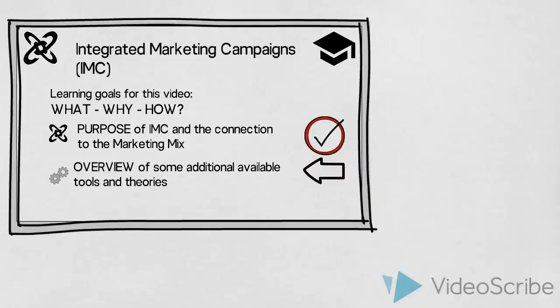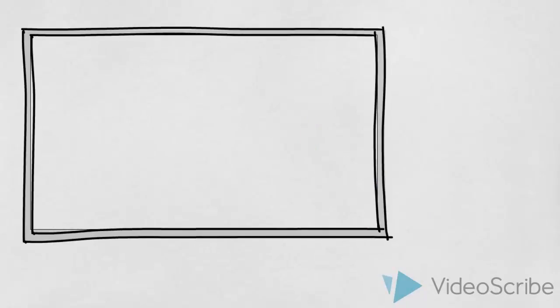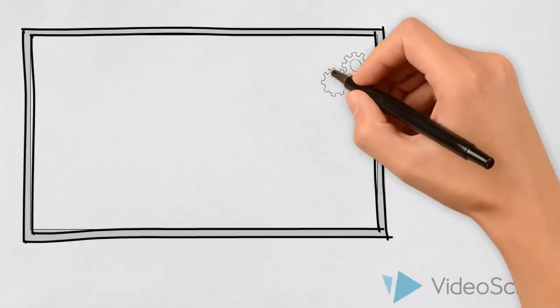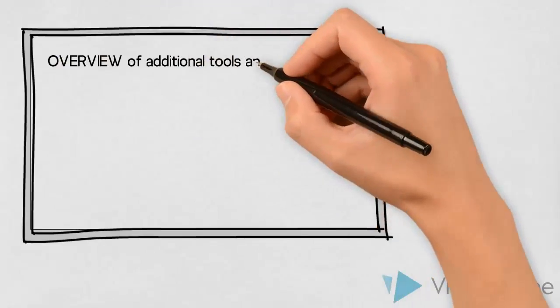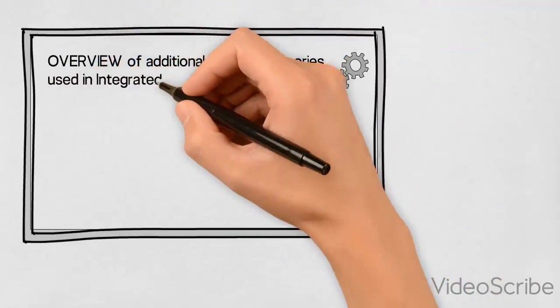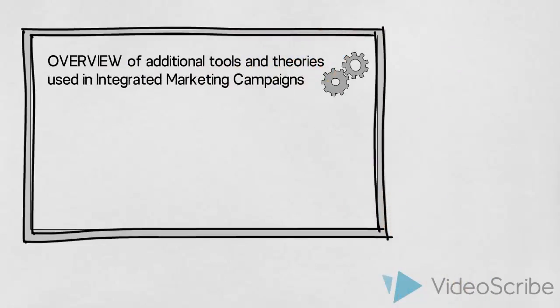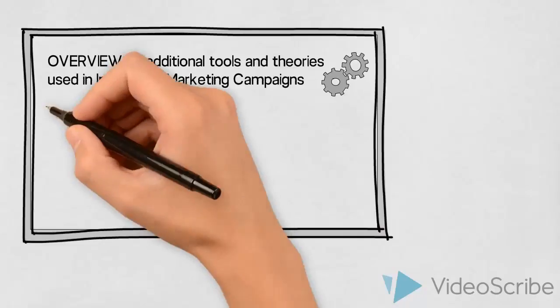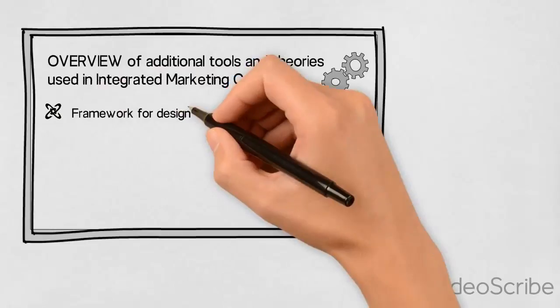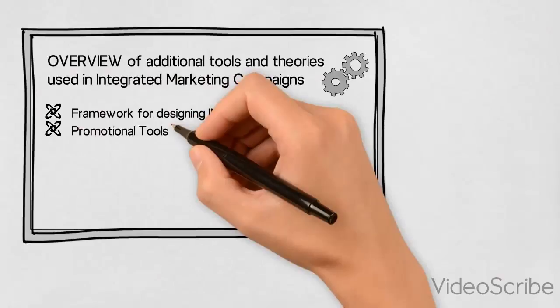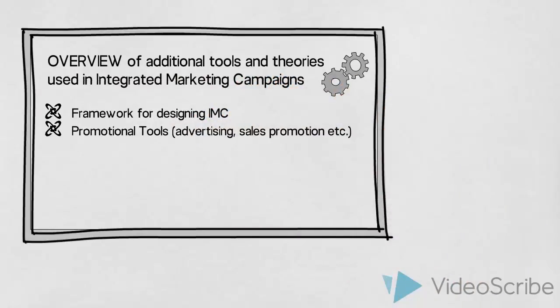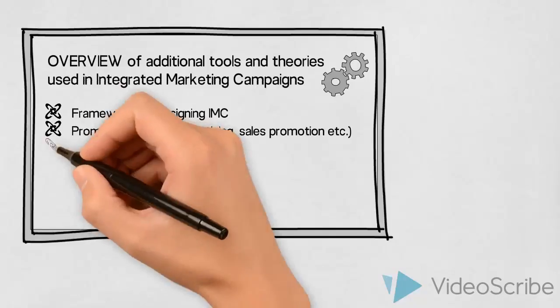In addition to the factors we have just discussed, we as marketers have some additional tools and theories we can use to guide us when creating an integrated marketing campaign. These will not be described in detail in this video, but let us just introduce an overview. We could use a framework for designing integrated marketing campaigns to guide us through the process. We should get to know the different promotional tools available to us, such as advertising and sales promotions, and study the advantages and disadvantages of each tool.